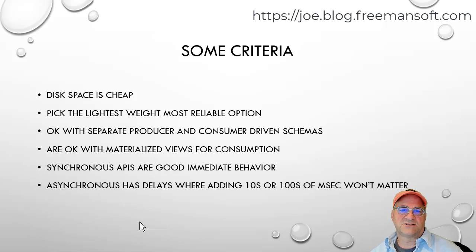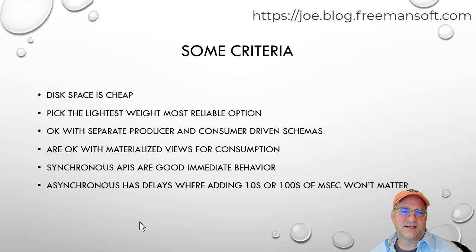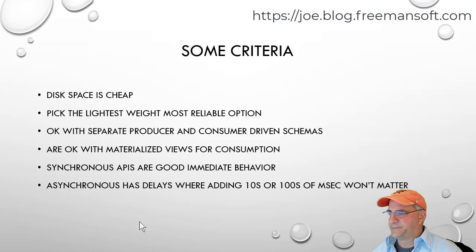We're going to separate the producer and consumer-driven schemas. The way the data goes into the system may not be the way it's consumed. In a relational database, typically you put the data in exactly how it's going to be consumed. In this case, we might take a different approach — we're okay with a materialized view for consumption. You'll see that in a CQRS pattern, which I'll talk about later. The idea is we store data in this append-only database, and if we need some kind of inverted index or different partition keys, we're okay with that being eventually consistent.